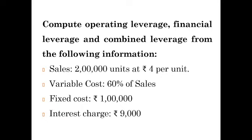Compute operating leverage, financial leverage, and combined leverage from the following information. Sales is given as 2,00,000 units at rupees 4 per unit selling price. Here we need to convert sales into volume because it is given in terms of units. So in any case, do not consider sales as 2,00,000. Sales must be converted: 2,00,000 should be multiplied by 4.